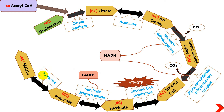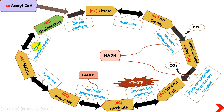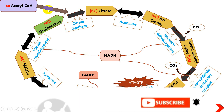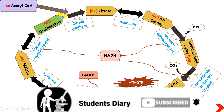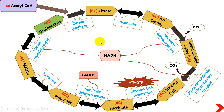Fumarate is acted upon by fumarase enzyme, which converts it into malate. This malate is then ready to be reconverted back into oxaloacetate with the help of malate dehydrogenase enzyme, releasing another NADH molecule. Oxaloacetate is thus regenerated, and the Krebs cycle continues with the addition of another acetyl-CoA. Overall, a single acetyl-CoA yields three NADH, one FADH₂, and one substrate-level ATP.